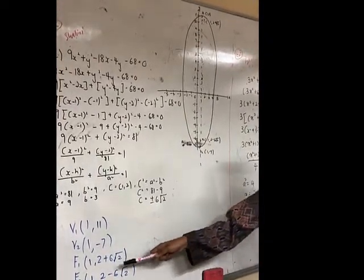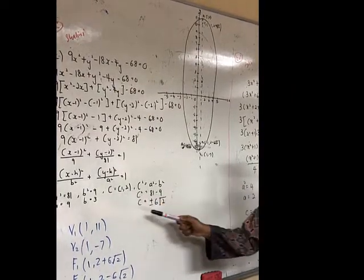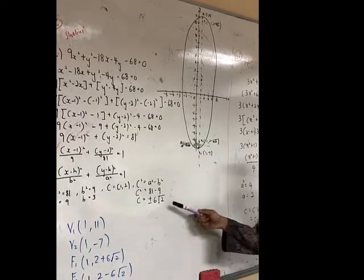For the foci, we use C. So 2 plus √6 and 2 minus √6.